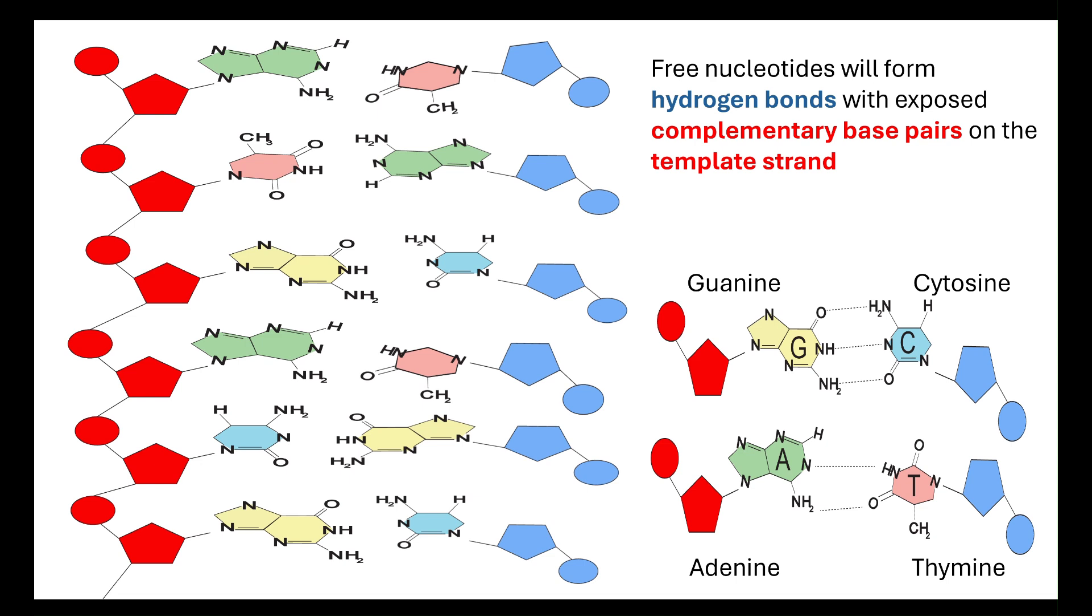These complementary base pairs are happening to each of the template strands. Our guanine and cytosine are forming three hydrogen bonds and our adenine and thymine are forming two hydrogen bonds.